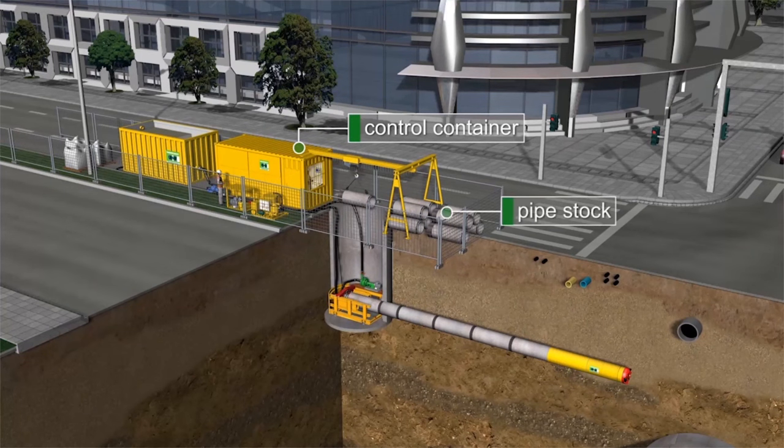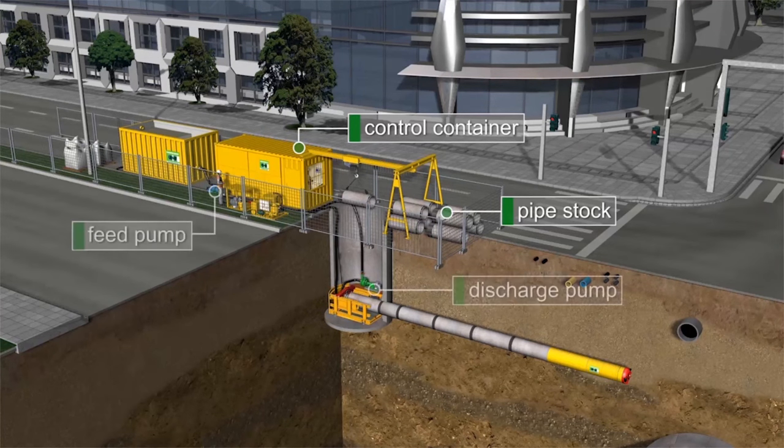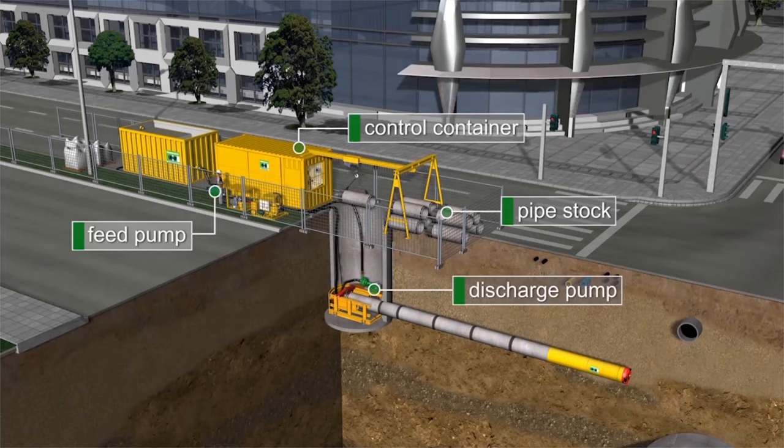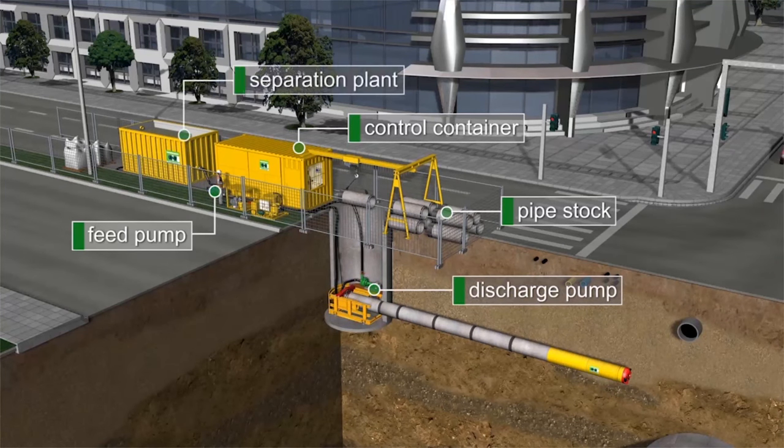A pipe stock is then established and maintained in front of the shaft to feed the shaft crane. The slurry feed pump and the slurry discharge pump are connected between the shaft and the control container, and then connected through the separation plant to form a closed slurry circuit.